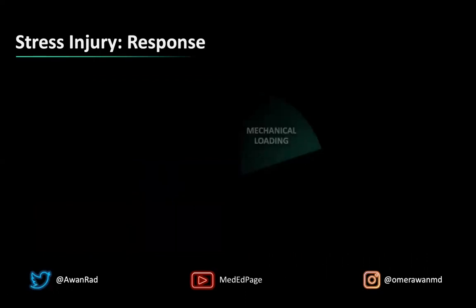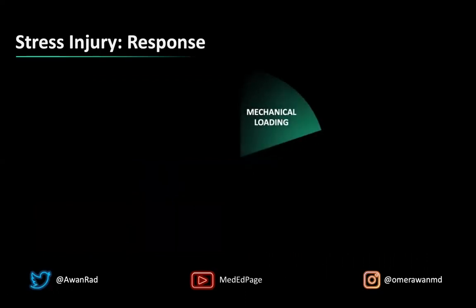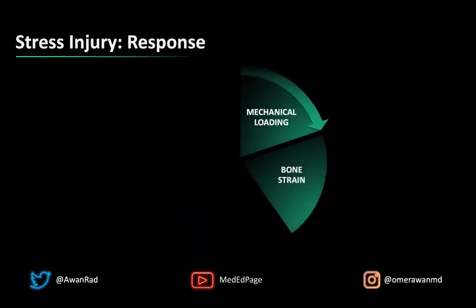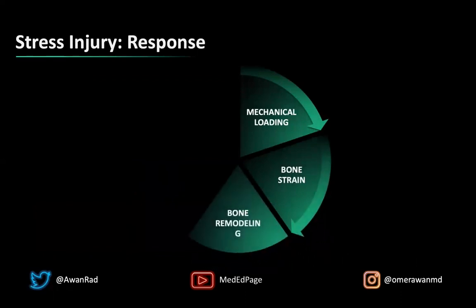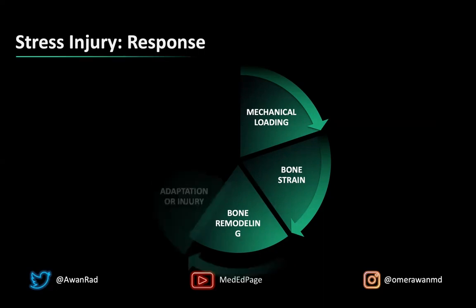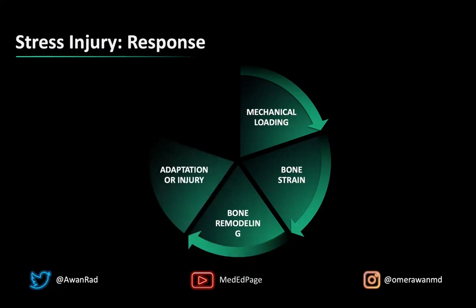Stress injury is very complex. We often start with mechanical loading or abnormal forces applied to an underlying bone, which will strain the bone because it's subjected to forces it's not usually used to. Then you start to get bone remodeling. In a normal resting state, osteoclasts and osteoblasts are both activated. Osteoclasts resorb bone; osteoblasts are cells that make bone. At rest, osteoclasts are more active than osteoblasts. However, if you have a fracture, your body will recruit osteoblasts to form new bone, form callus, and make new bone — that's adaptation.